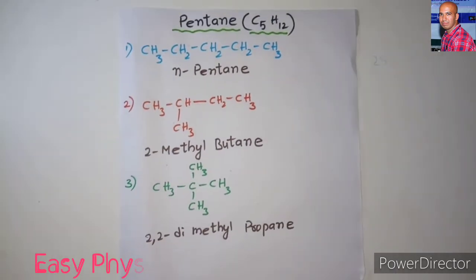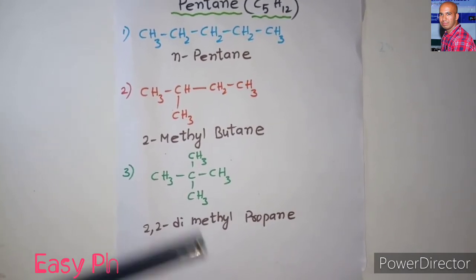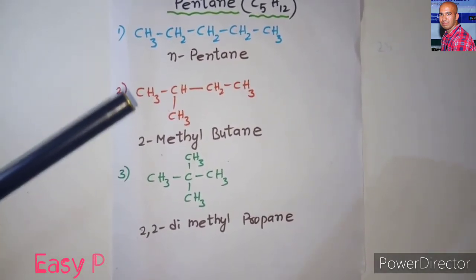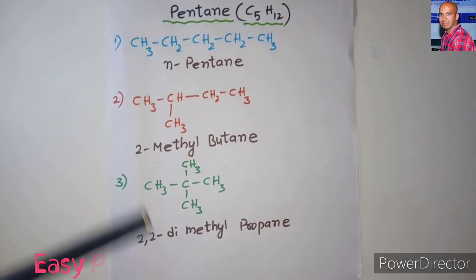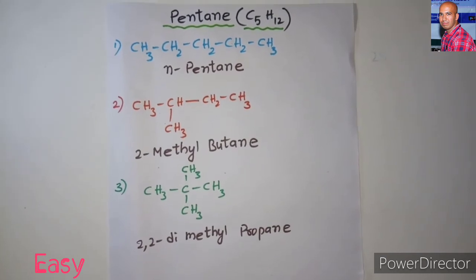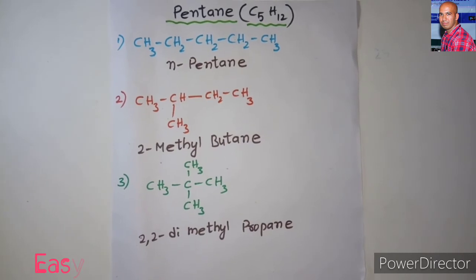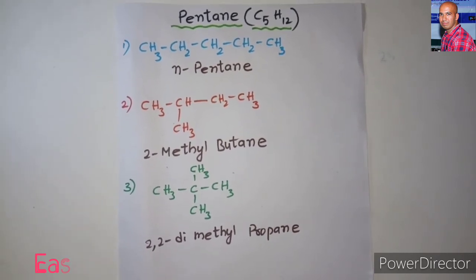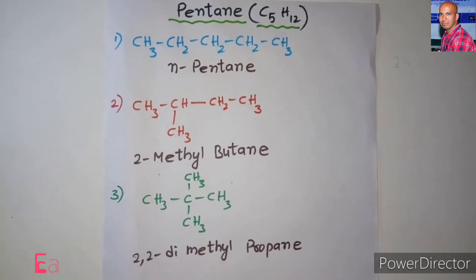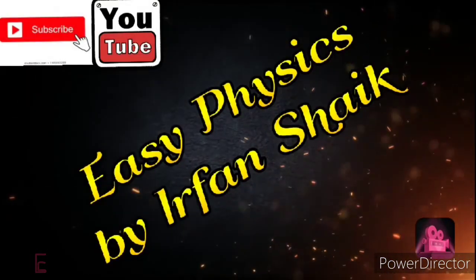In all three structures the chemical formula is the same — C5H12 — but the structures are different. So this is called the phenomenon of isomerism, and all three are called isomers. Having the same chemical formula but different structures — this phenomenon is called isomerism. I hope you understand this. Thank you.